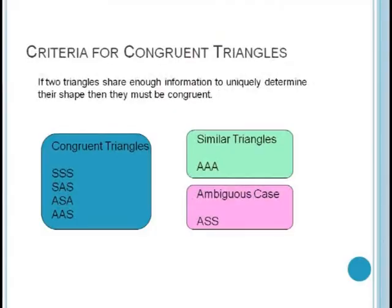So how does this all help us with congruence and similarity? A key result for triangles is that if two triangles share enough information to uniquely determine their shape, then they must be congruent. The summary is given below. Basically, every case of three matches will guarantee congruence, except for two. Those are the AAA case, which turns out to be our criteria for similarity, and our pain in the ass case, which is ambiguous.